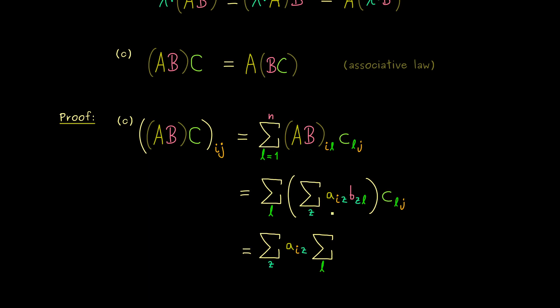Moreover, because you see, the factor Aiz has nothing to do with the sum over L, we can put it in front of the sum. And then we can immediately conclude, what we have here on the right hand side is exactly the matrix product B with C.